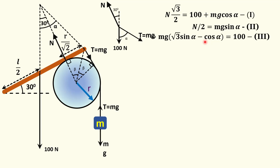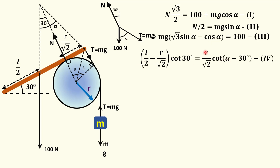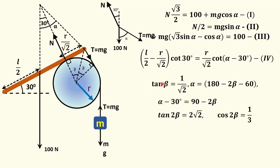Writing the conditions for translational equilibrium gives two equations — one in the vertical direction and one in the horizontal direction. Using these two, I get a combined equation. Now for some geometry: you should pause and guess where equation 4 is coming from. It comes from these two right-angle triangles. The base is the same in both, so I equate the base from both triangles. In the first right-angle triangle, the base equals r over root 2 times cot of (alpha minus 30). This equals (L/2) minus (r over root 2) times cot 30 degrees. This is equation 4.